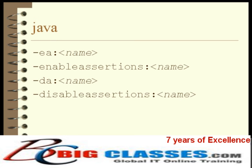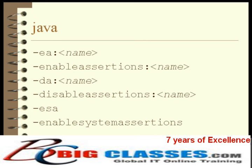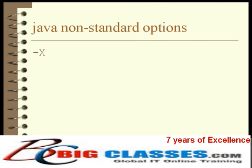This enables assertions in all system classes. This is the default. This disables assertions in all system classes. This option will list the non-standard options available in the JVM.